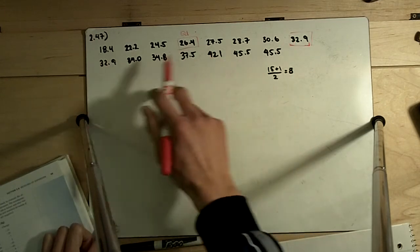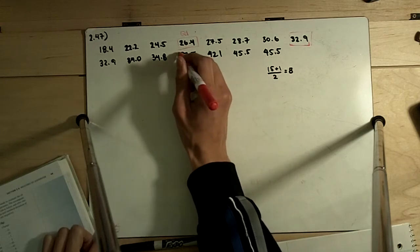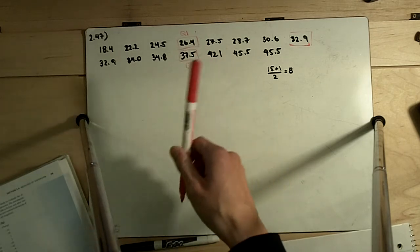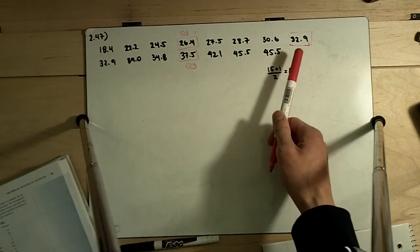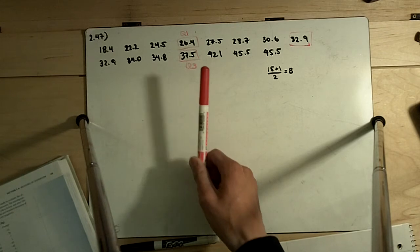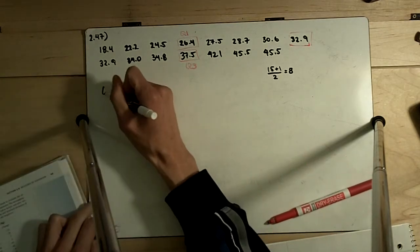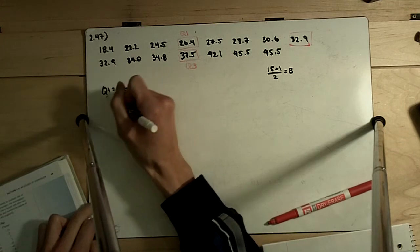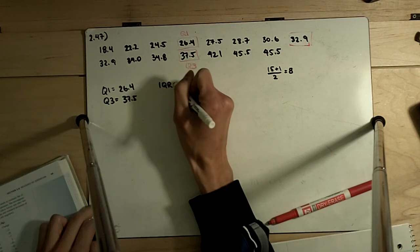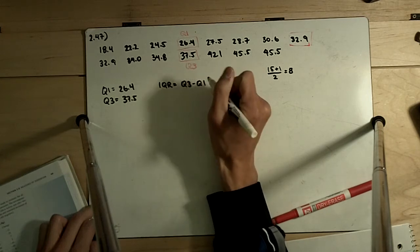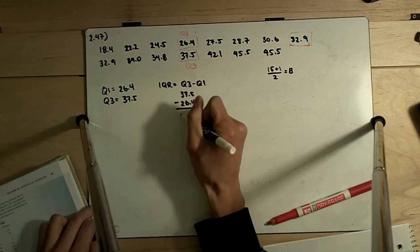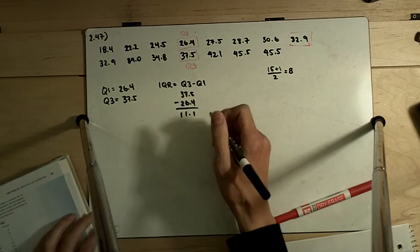Q3 is going to be the middle number of the upper list, from 32.9 to 45.5. Each sub-list has 7 numbers, and 7 plus 1 divided by 2 gives us 4, so the fourth number in each list is the median. We have Q1 equal to 26.4 and Q3 equal to 37.5. The IQR is defined as Q3 minus Q1, so 37.5 minus 26.4 gives us 11.1 — that is our IQR.